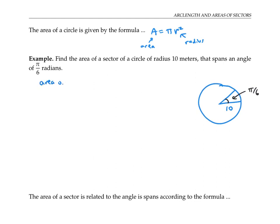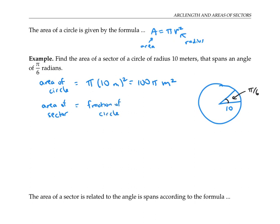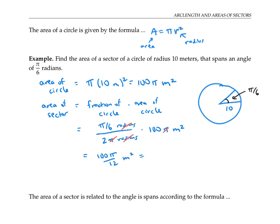We know the total area of the circle is pi times 10 meters squared, or 100 pi meters squared. We want a fraction of that area to give us the area of our sector. So we take the fraction of the circle that the sector makes — the angle of pi over six divided by the total angle two pi — times 100 pi meters squared. That simplifies to 100 pi over 12 meters squared, or 25 thirds pi meters squared. As a decimal, that's 26.18 meters squared, to two decimal places.